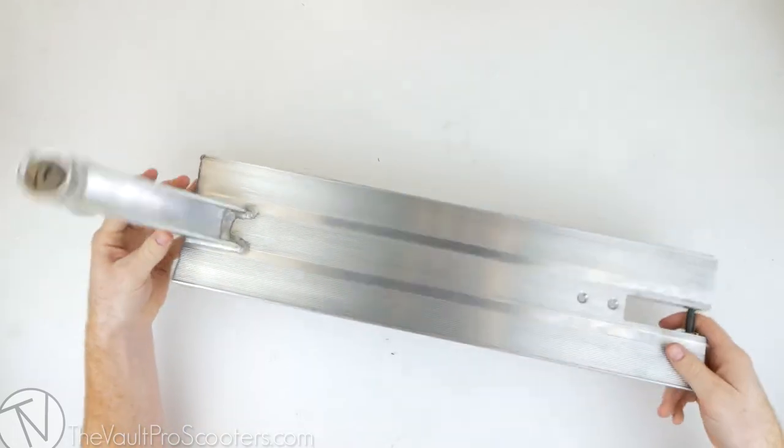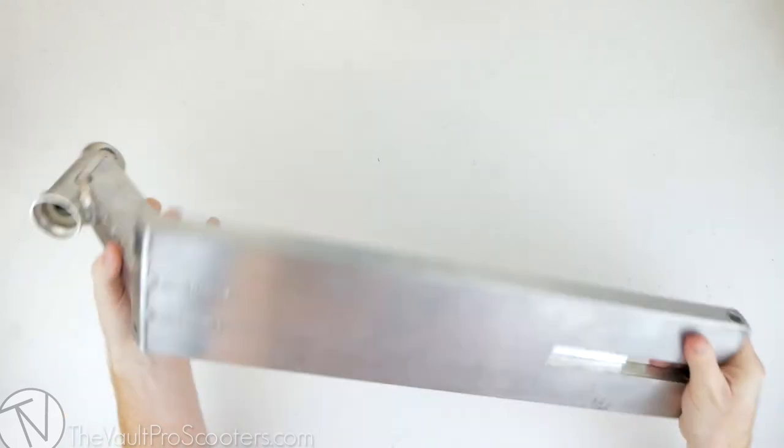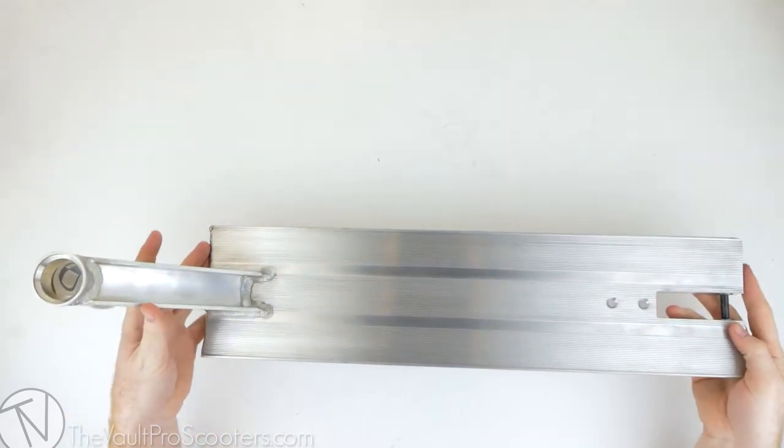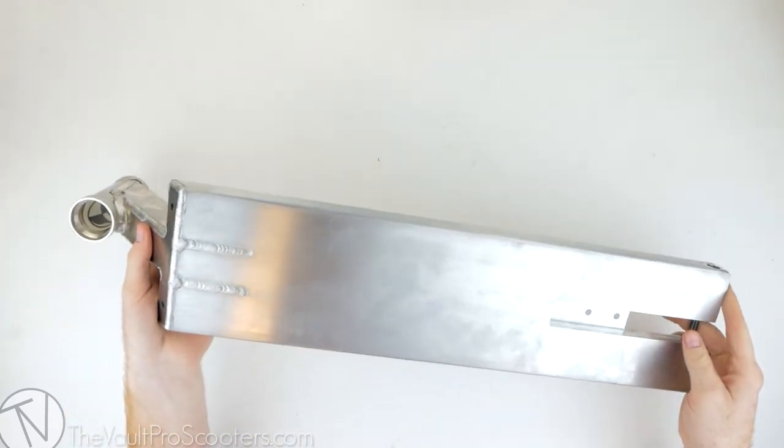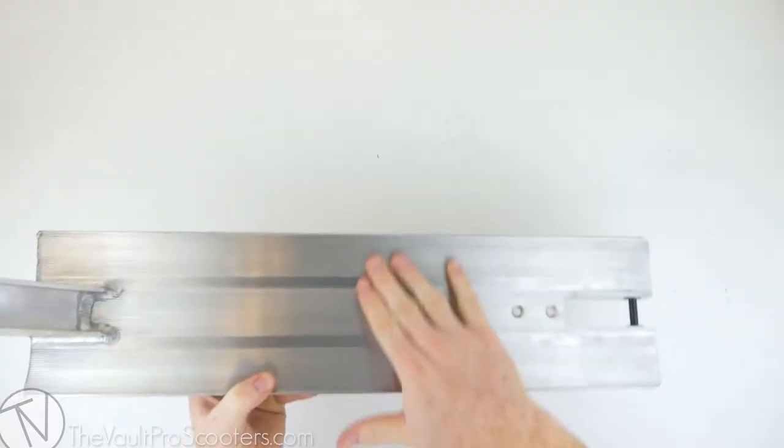Hey guys, welcome to vaultproscooters.com. Today you're watching another product overview, this time we're looking at the all-new TSI box cutter deck. The TSI box cutter is the newest evolution in the TSI line of decks, coming in at 5.5 inches wide by 22.2 inches long, and it weighs in at just four pounds six ounces.